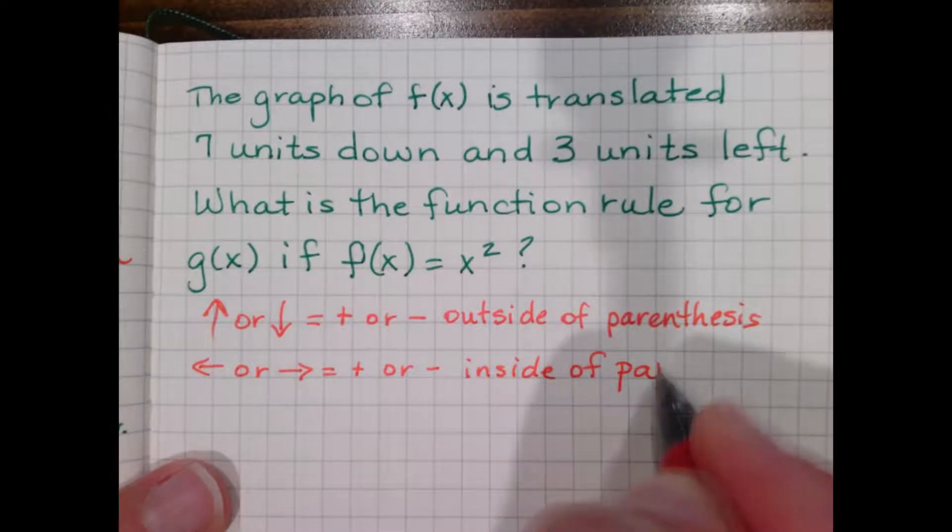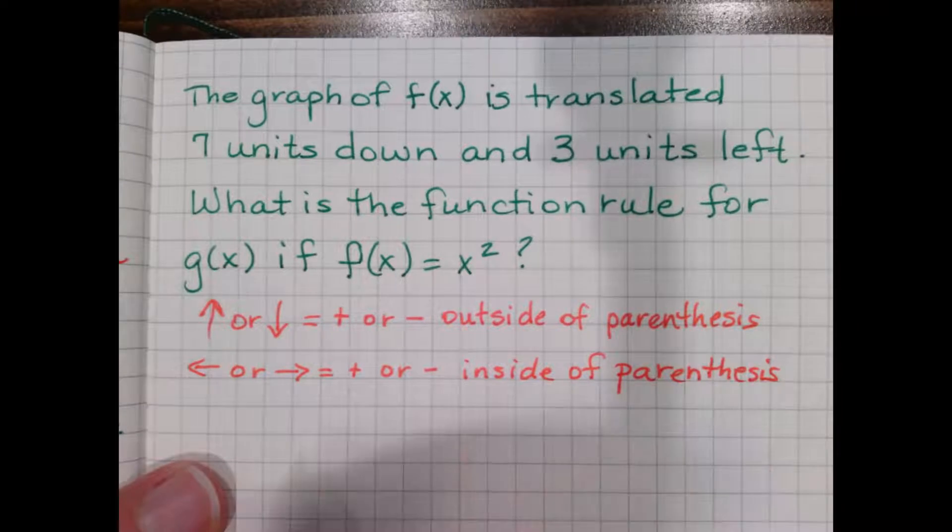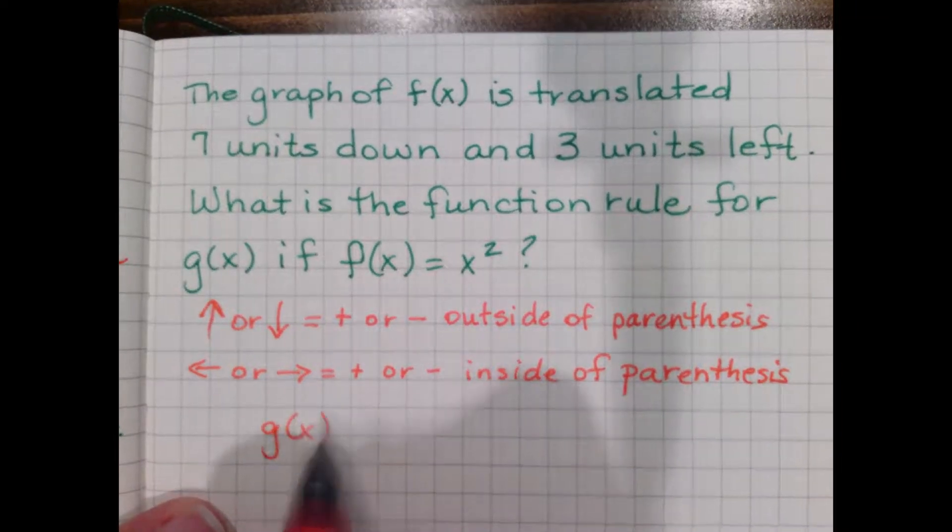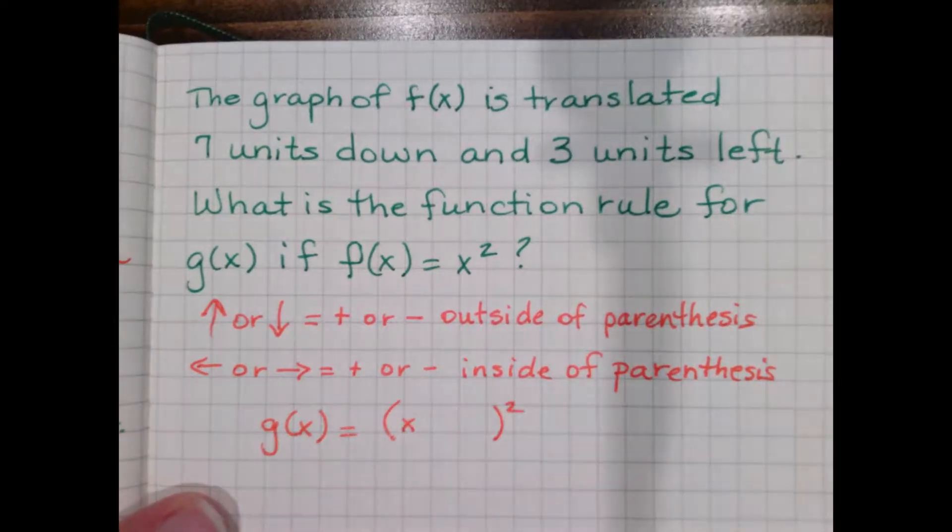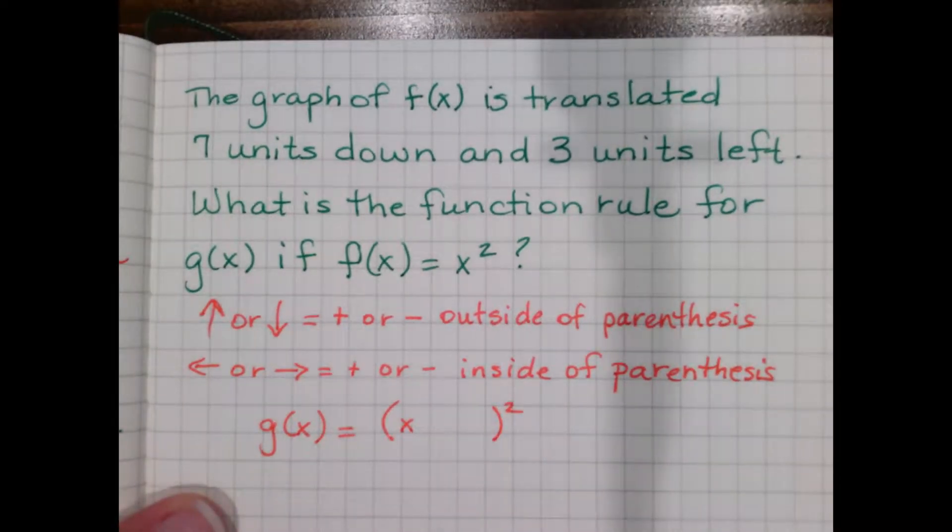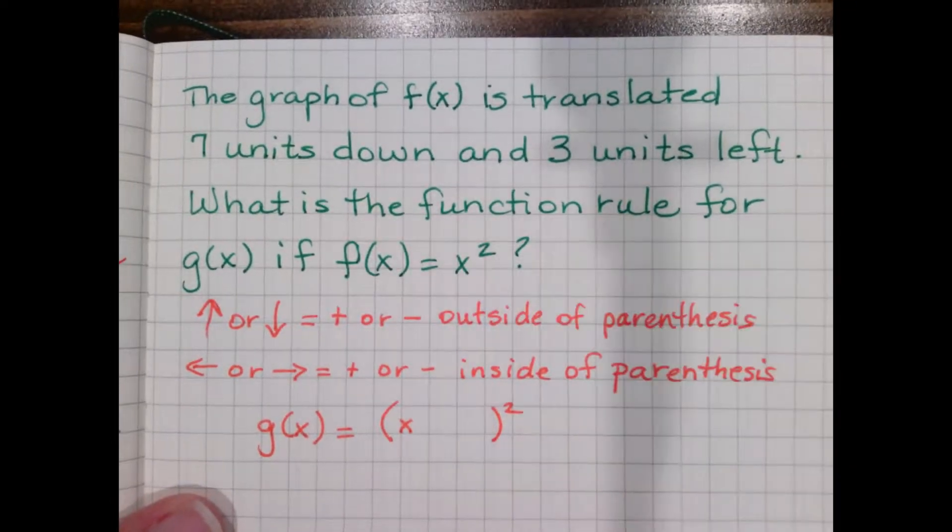So since we actually have both transformations going on here, we're going to go ahead and put a parentheses in there. I know the parentheses has an x because it was x squared originally, and I know the parentheses is squared because the original function was x squared.